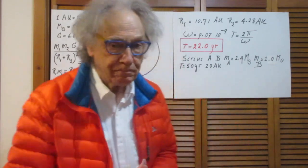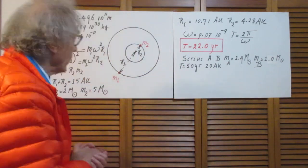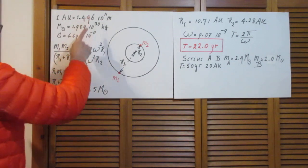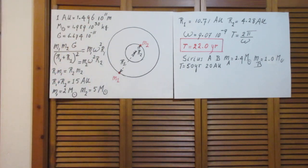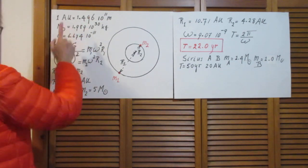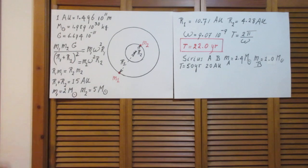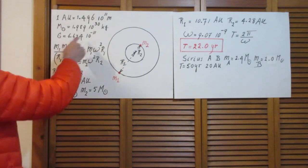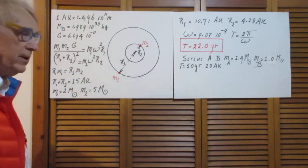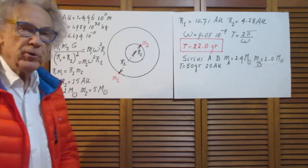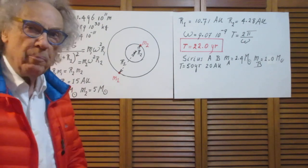We're ready for this. An astronomical unit is 150 million kilometers. The mass of the Sun is about 2 times 10 to the 30 kilograms — I give you more digits than you need. And the gravitational constant is 6.67 times 10 to the minus 11 in units kilogram meter seconds.